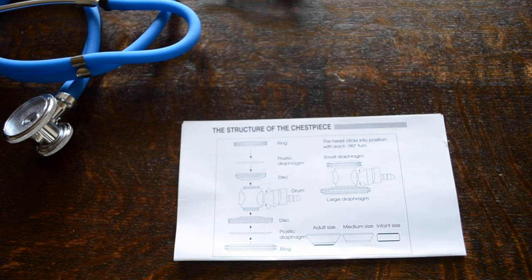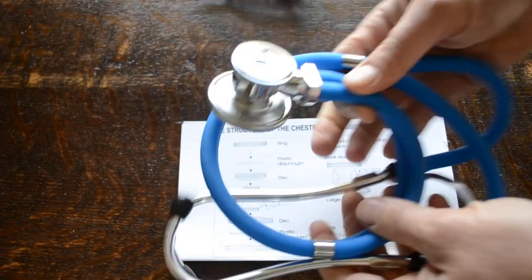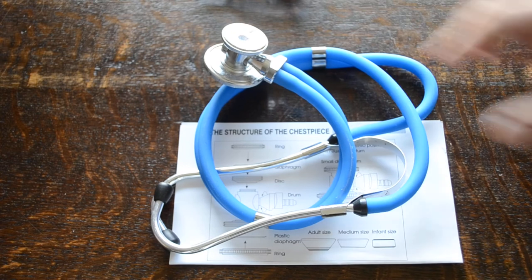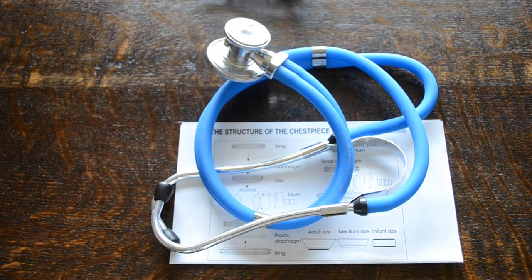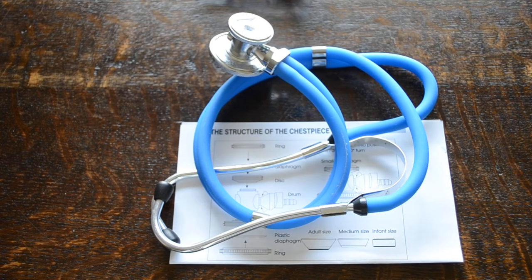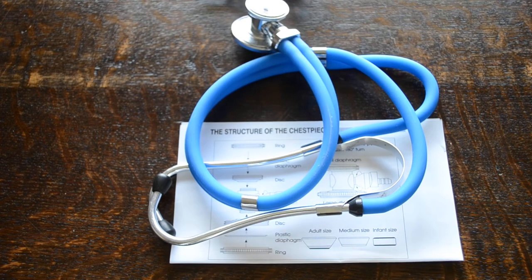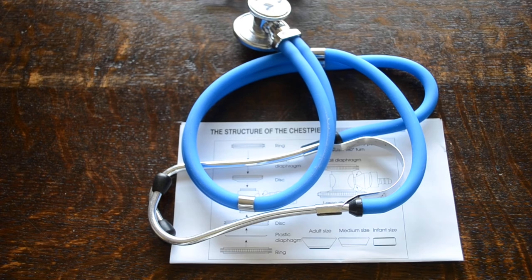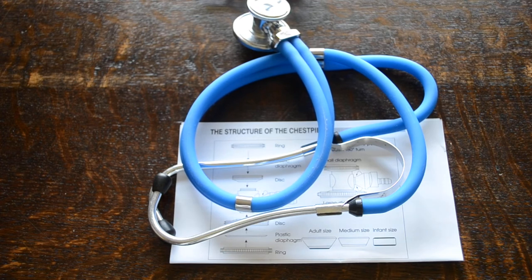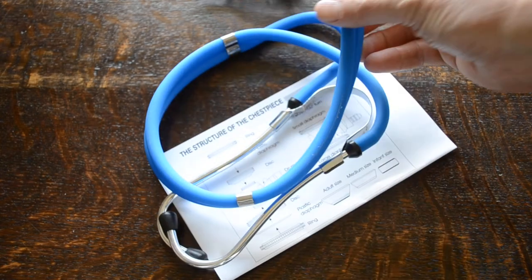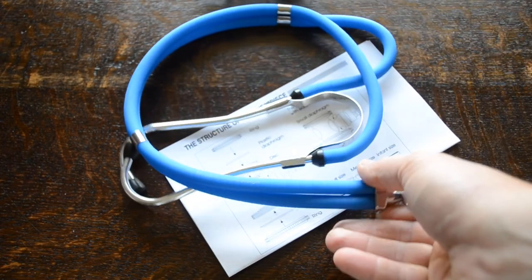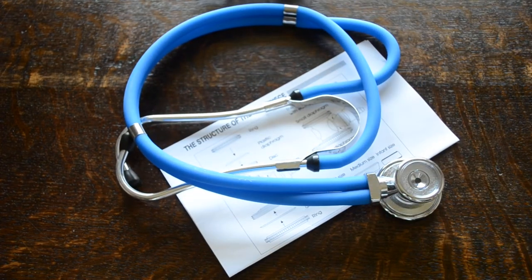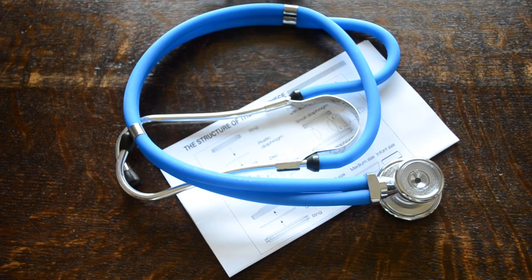So that's the Valumed Blue Tube Sprague Rappaport stethoscope. These units only cost around £9.95 with delivery. In the UK you're looking at £12-£13 depending on your preferred delivery route. So it offers extremely good value for money and very good auscultation quality in clinical daily use. It's going to stand out from the crowd. It's not your standard stethoscope, but really is when it comes to listening to chest and hearts. A really good quality piece of kit available from valumed.co.uk.